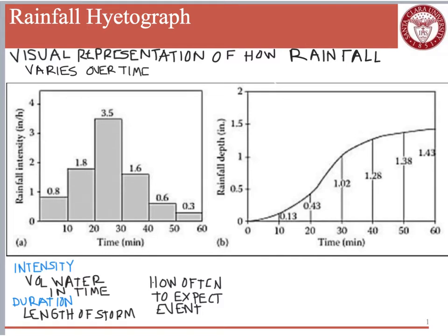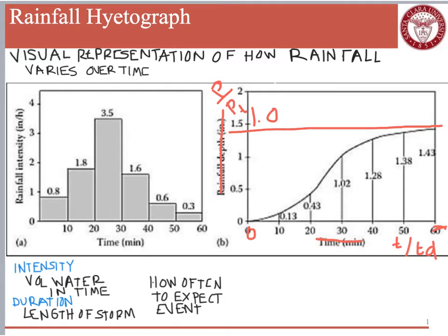The cumulative hyetograph has the same duration, but instead of showing how intensity changes, it accumulates how much total rainfall has fallen during the event. Sometimes it is helpful to normalize this so that rather than showing time in minutes, we show time over the total duration — so the max becomes 1 and the minimum becomes 0. On the y-axis, rather than rainfall depth, we show depth P over the total depth, again normalized from 0 to 1.